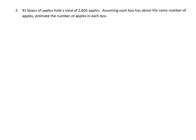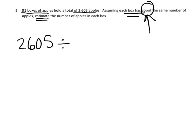Now we're going to practice with a word problem. We've got 91 boxes of apples hold a total of 2,605 apples, assuming each box has about the same number of apples. Estimate the number of apples in each box. So we know that if we were going to find this exactly, it would require division. So 2,605 divided by 91.